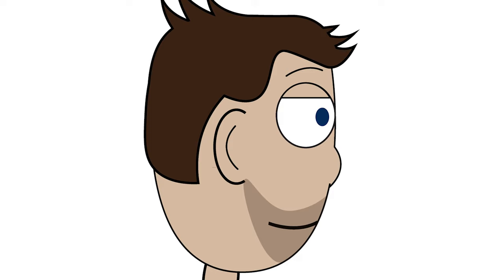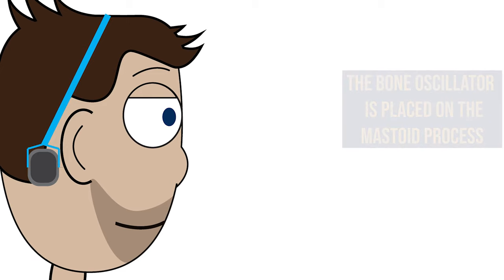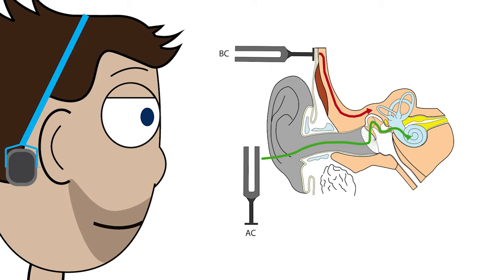The process is repeated but a bone oscillator is placed over the mastoid process which vibrates at different frequencies. This vibration will travel directly to the cochlea and stimulate it. This means that we can test the function of the cochlea separately.